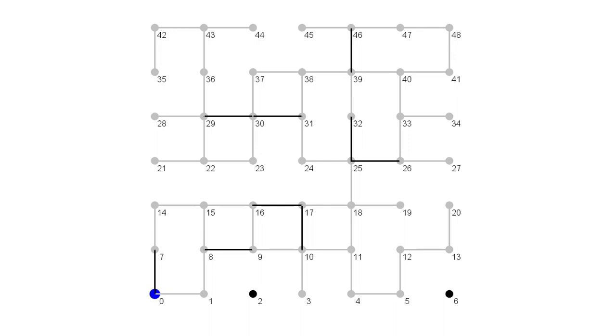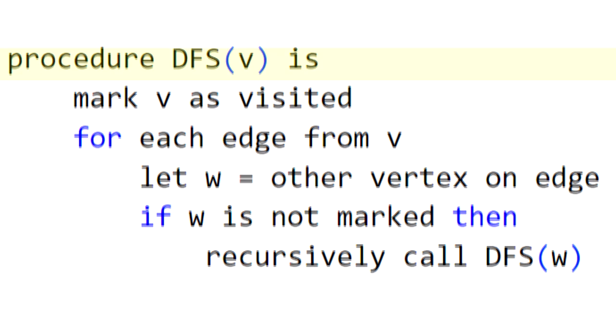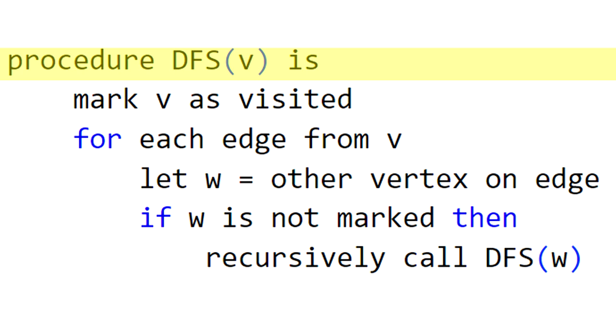Surely the algorithm for this complex procedure will be very long, with lots of cases to consider, right? Actually, it's astonishingly simple. This is it. Let's walk through it. We're calling this procedure DFS, for Depth First Search. The V stands for the vertex we're starting at. Our first step is to mark V as visited. In our illustration, we're using the light gray color on the vertex to mark it. This lets us know that V is reachable, and we can eliminate it from the vertices left to explore.